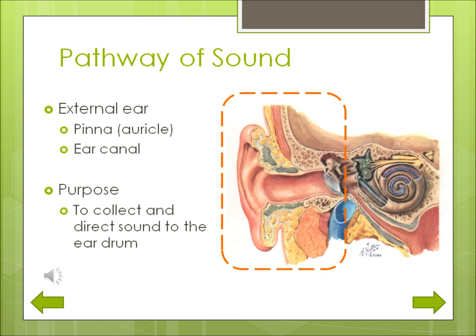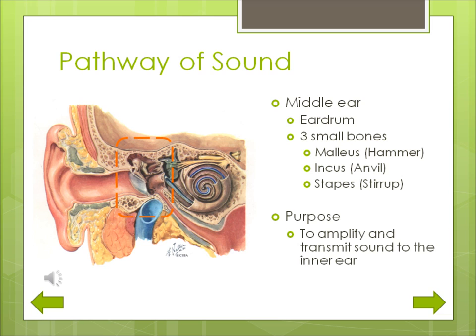The middle ear is a tiny space that contains the eardrum and the three smallest bones in the body: the malleus, incus, and stapes, also called the hammer, anvil, and stirrup. The eardrum and these tiny bones are connected together like a chain. When sound waves strike the eardrum, the vibrations are amplified and transmitted across the middle ear space to the inner ear.